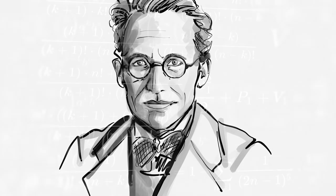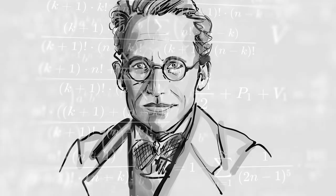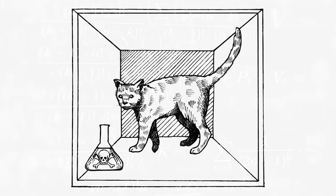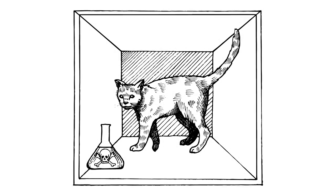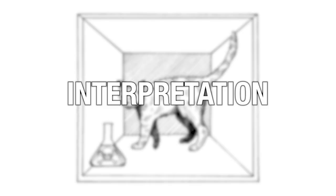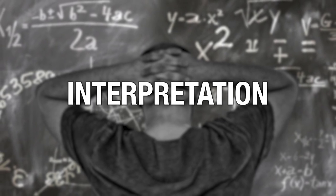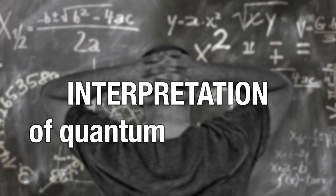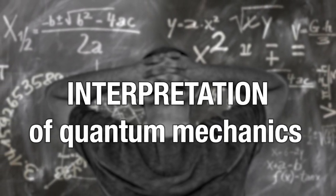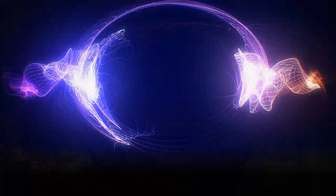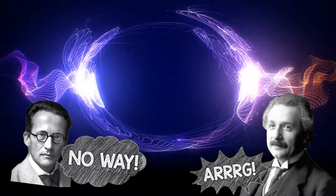Normally when you learn about Schrödinger's cat, they describe the thought experiment, but they don't tell you that Schrödinger was using the cat to criticize an interpretation of quantum mechanics. They don't even tell you that there are interpretations of quantum mechanics — which means interpretations of reality — and that physicists don't even agree on reality. I didn't know any of this until I went down the rabbit hole.